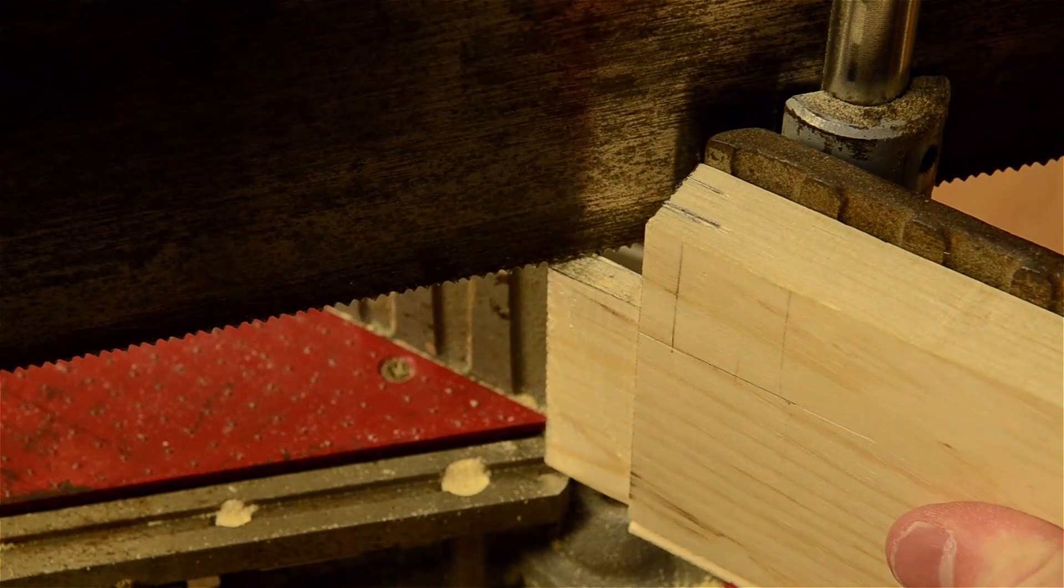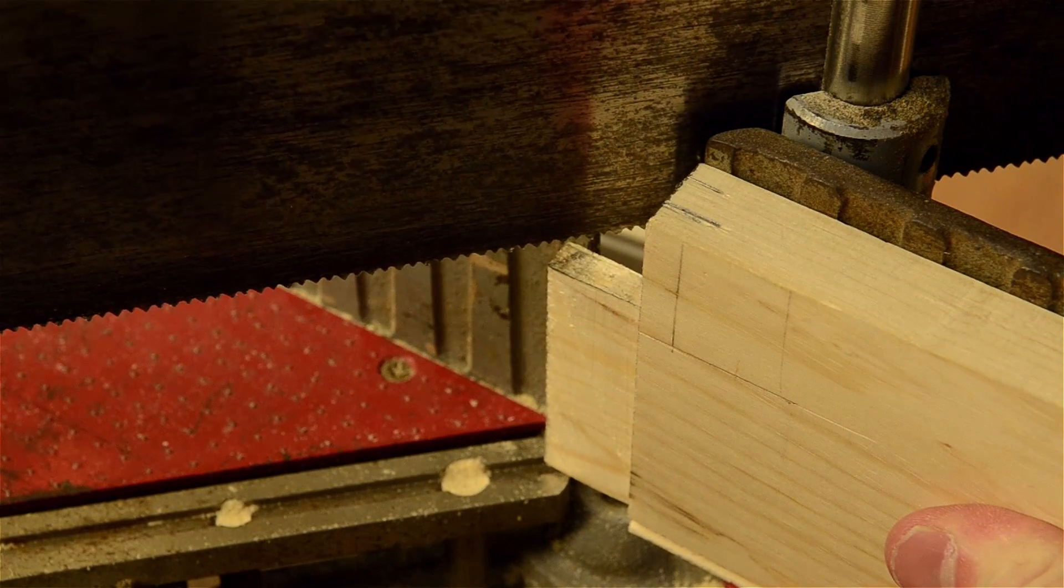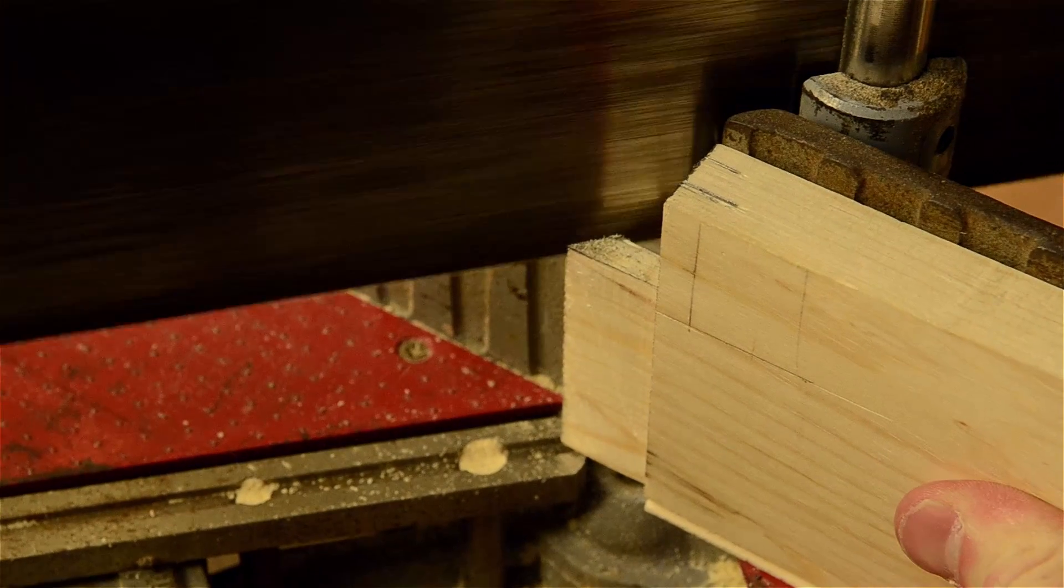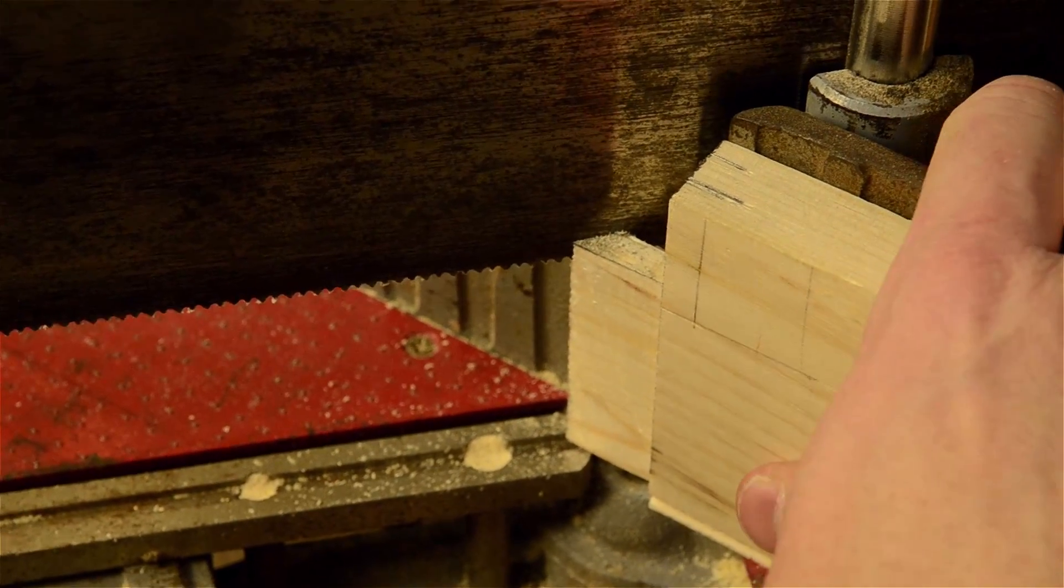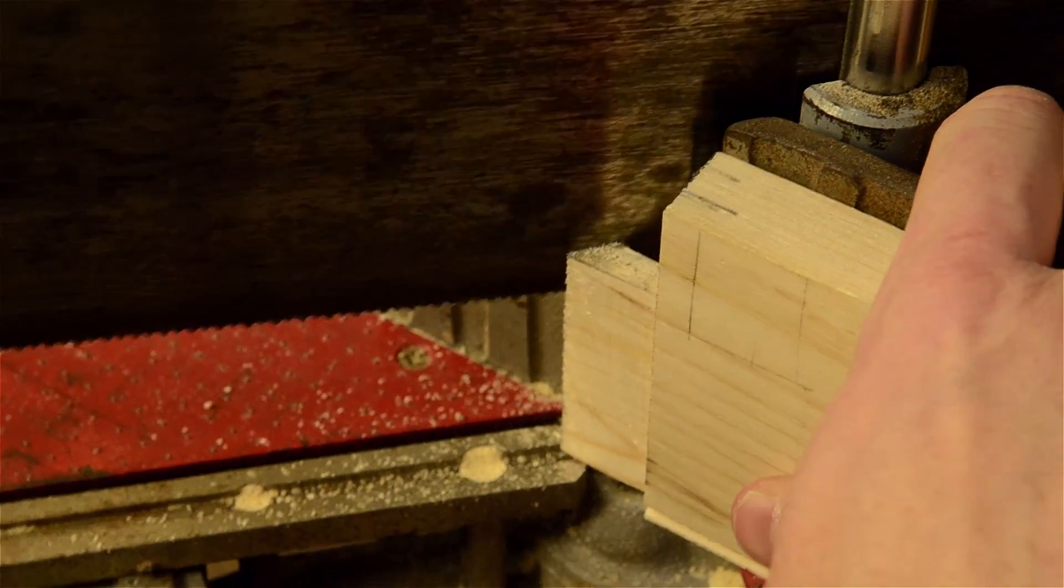So just set this on the miter box. And slice down at an easy 45 degree angle. It is easy to do on a miter box saw.